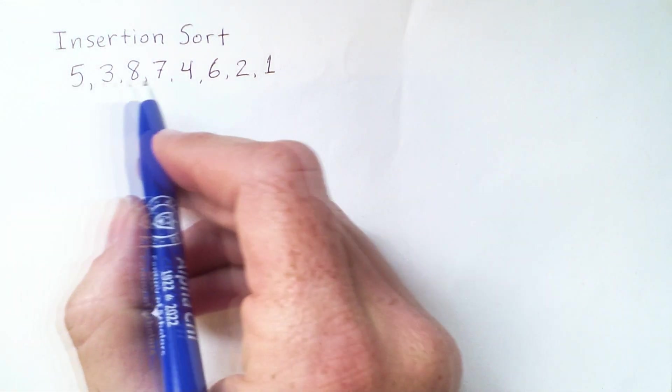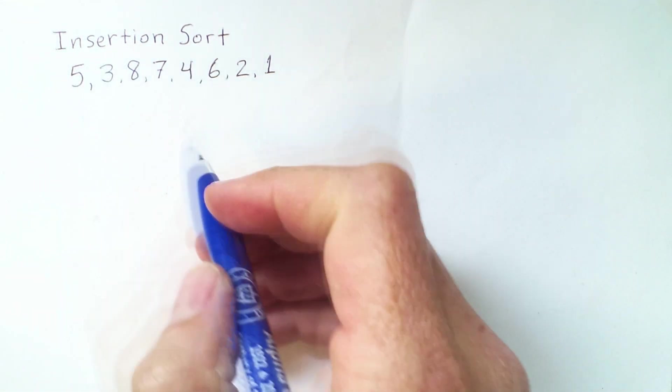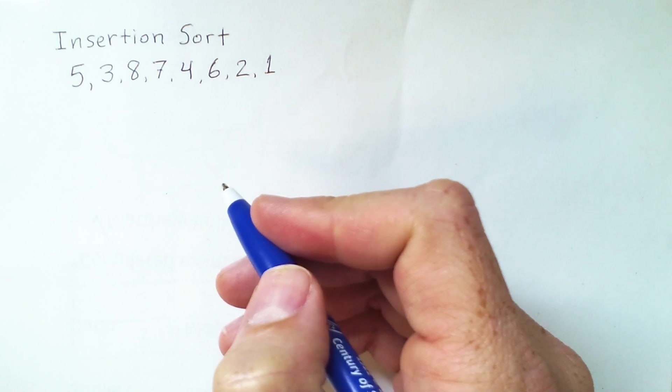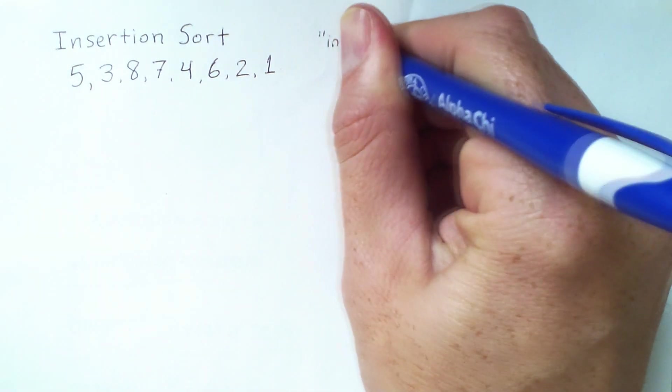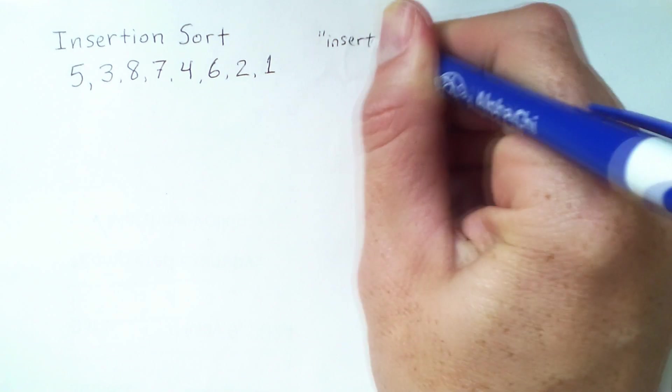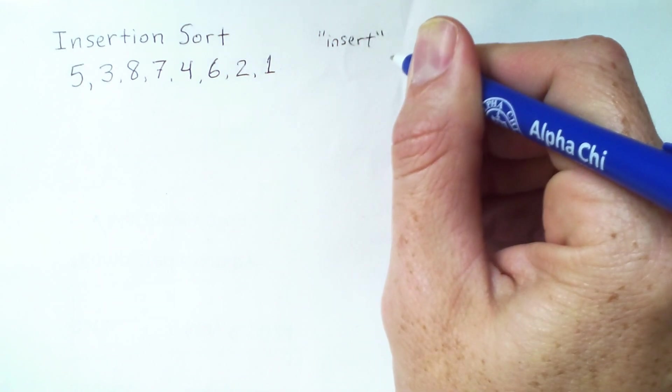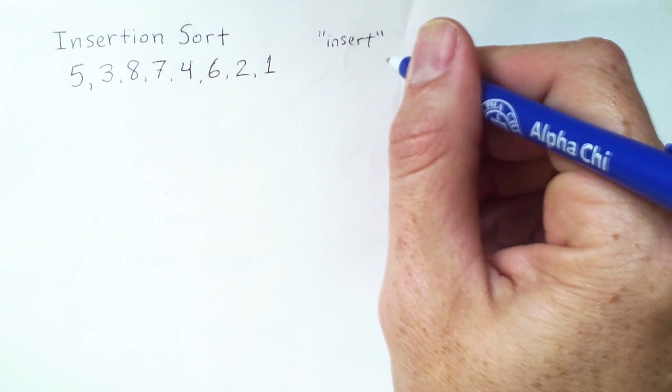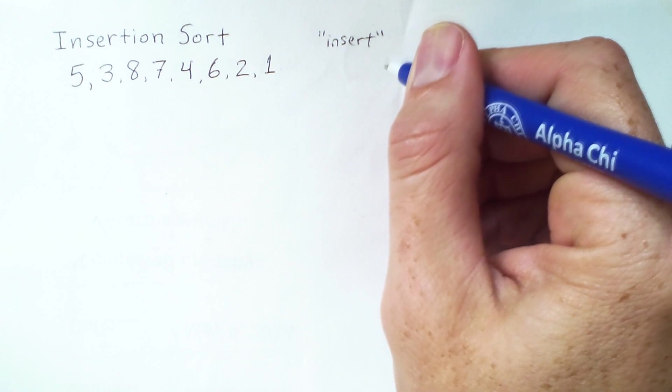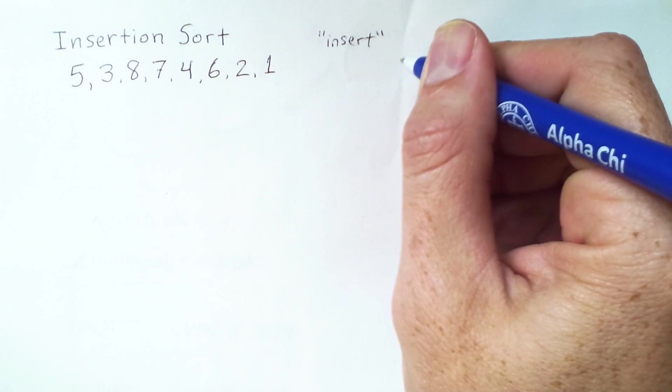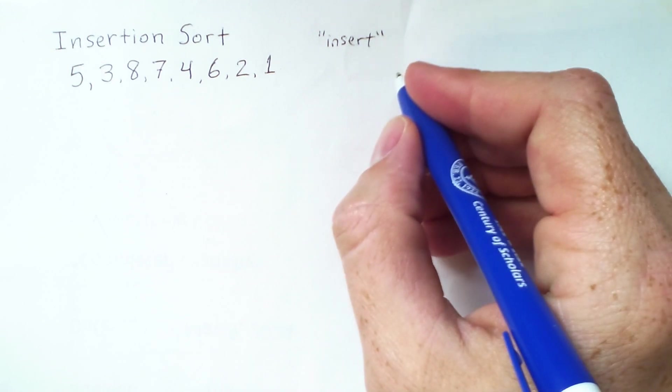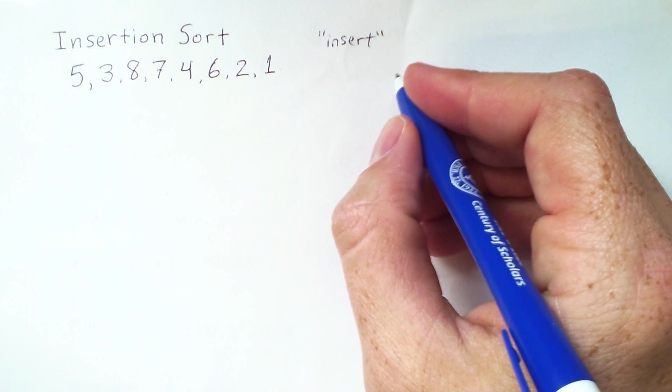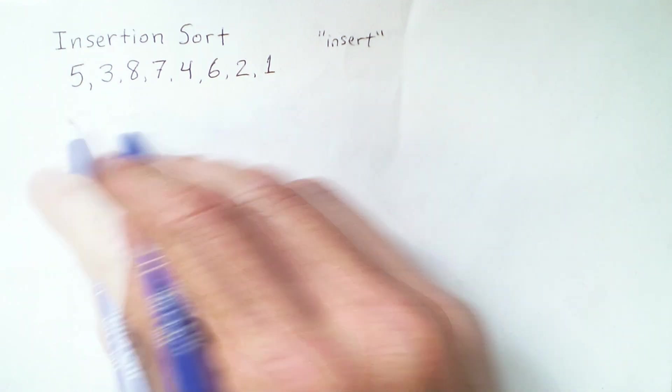Another simple sorting algorithm is insertion sort. The way that insertion sort works is that we will repeatedly insert an element into a list or subarray that is already sorted.